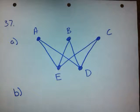Okay, for number 37, they're asking us for a lot of different things. So let's start with A and B. For A, they're asking us to modify the graph by adding the least number of edges so that the resulting graph is complete.